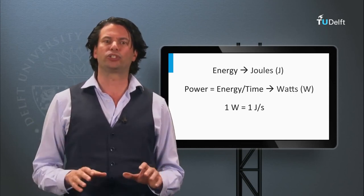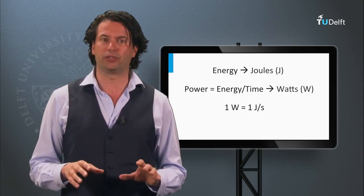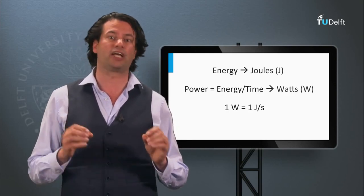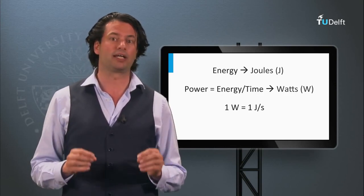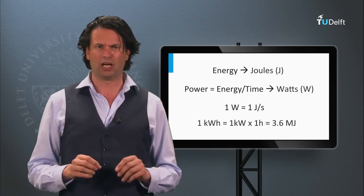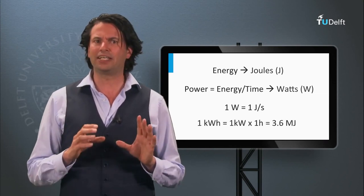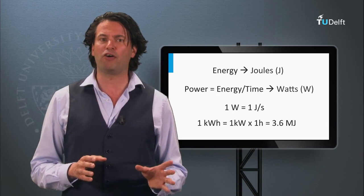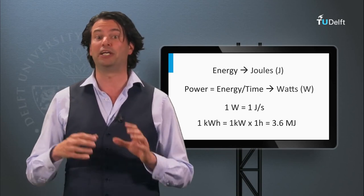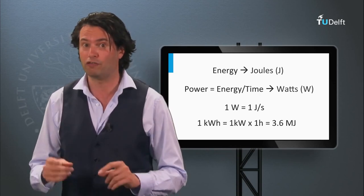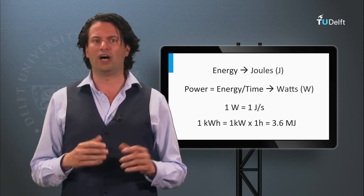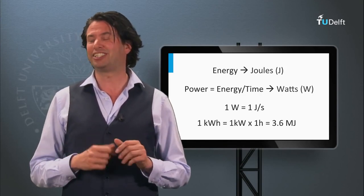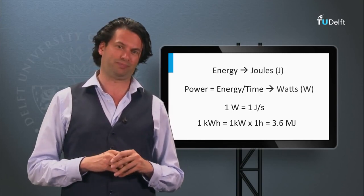In this course we will use a more practical unit, which is generally used to express electrical energy. One kilowatt hour equals the energy of a power of one kilowatt being used for one hour. One kilowatt hour equals 3.6 million joules.